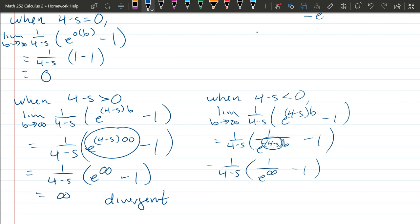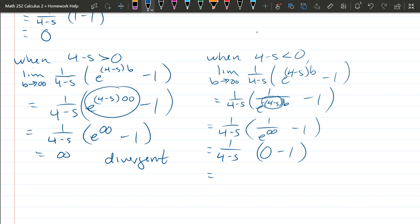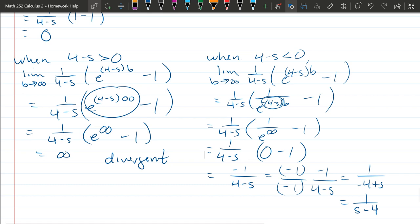And of course, what is e to the infinity? E to the infinity is infinity, but 1 over infinity is 0, still have that minus 1. And we're almost there. We have negative 1 times this fraction, or negative 1 over 4 minus s. Let's multiply the top and bottom by negative 1. So that gives us positive 1 on the top. We have negative 4 plus s, which we can write as s minus 4. We have 1 over s minus 4. This is the answer the problem was looking for, right here, 1 over s minus 4, not the 0 and not divergent. So this was really the case the problem was asking about.